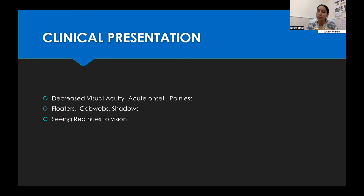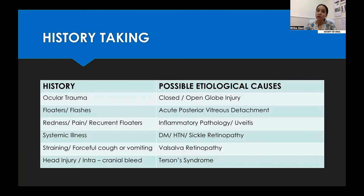The patient usually presents with decreased visual acuity, cobwebs and floaters, and seeing red hue in their vision. This is one condition where the patient sees nothing and the clinician sees nothing, so relevant history-taking is very important.